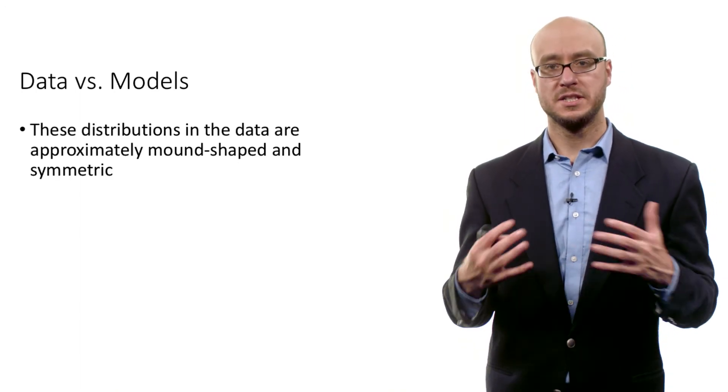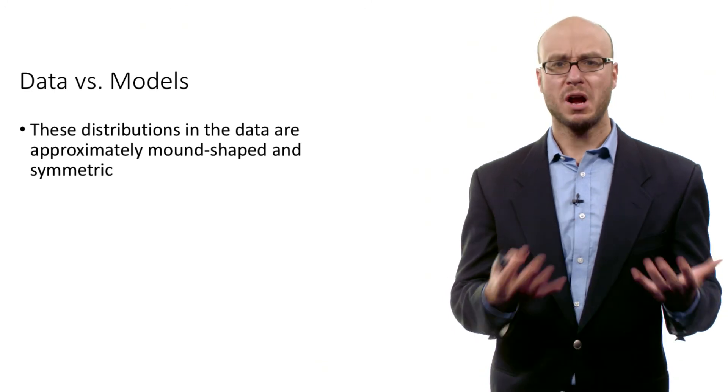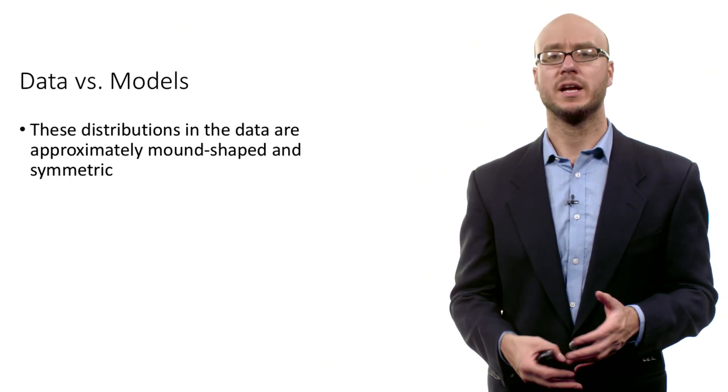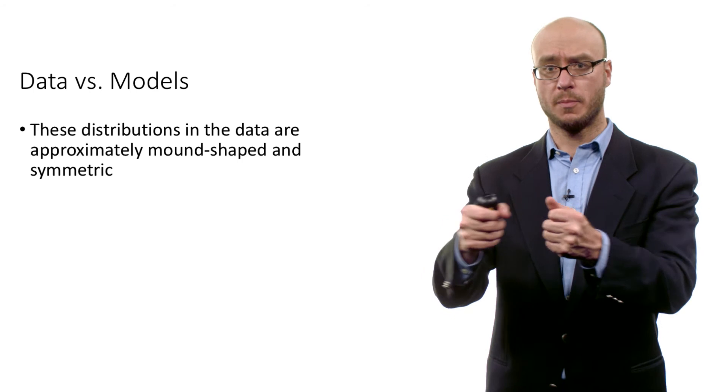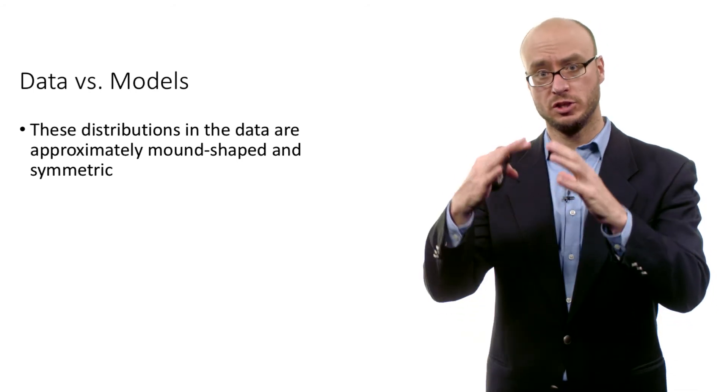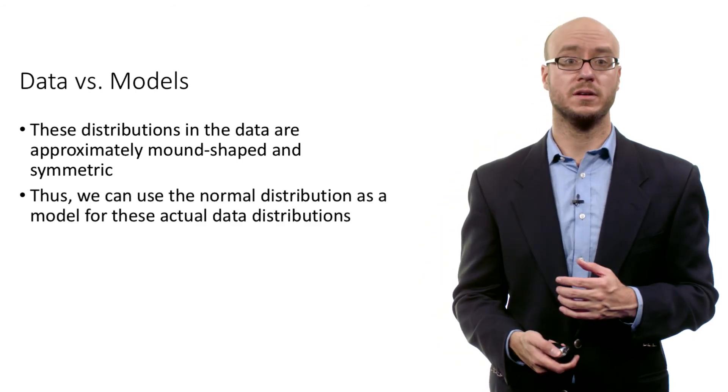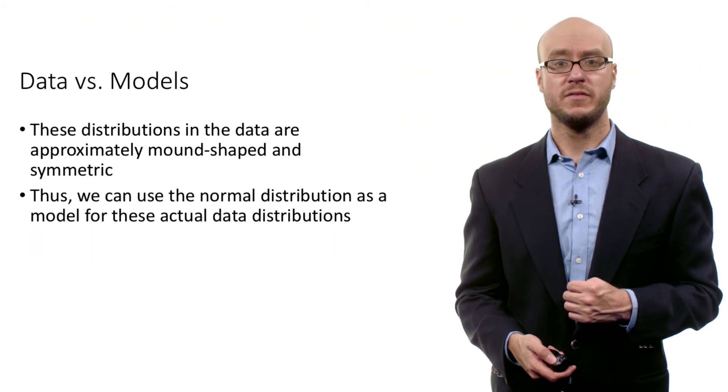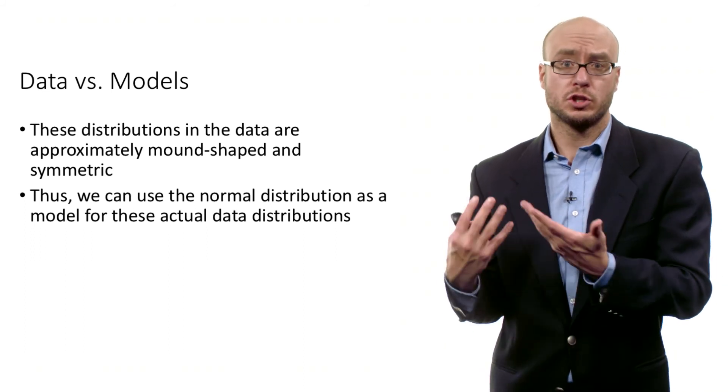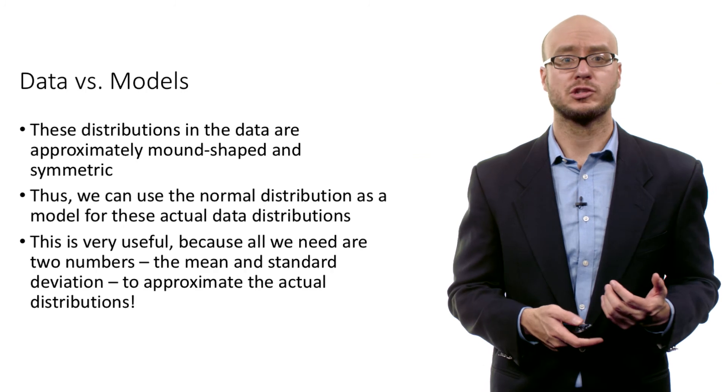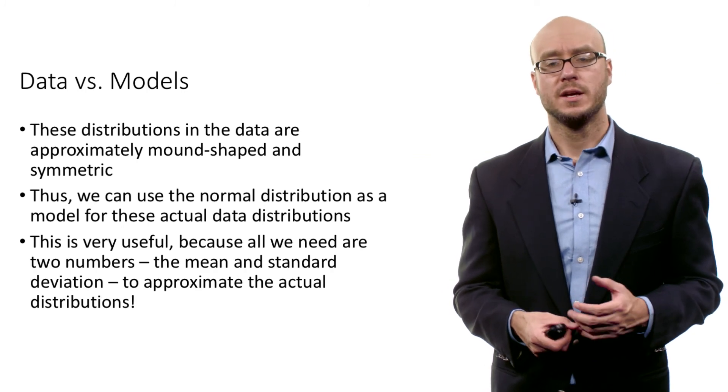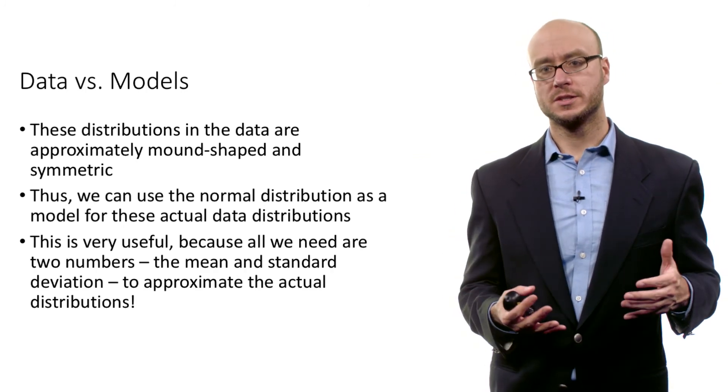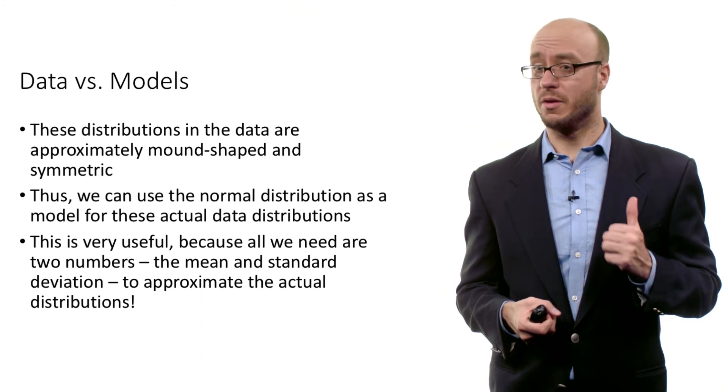The important point is that these distributions and the data, they're approximately mound-shaped and symmetric. And because of that, we can approximate these distributions using the normal distribution model, using these two values of a mean and a standard deviation. So you could use the normal distribution as a model for these actual data distributions. And again, this is very useful because you only need two values, the mean and the standard deviation.